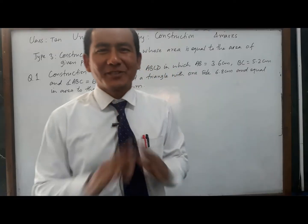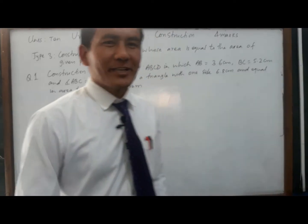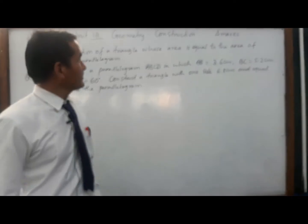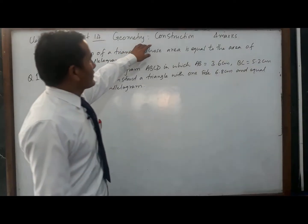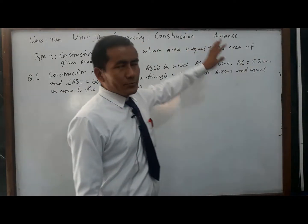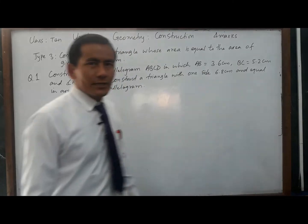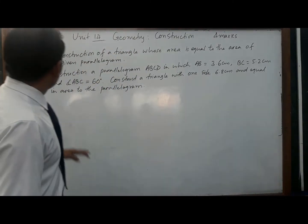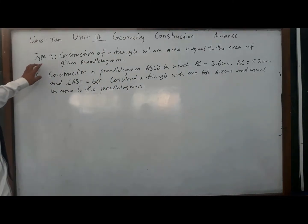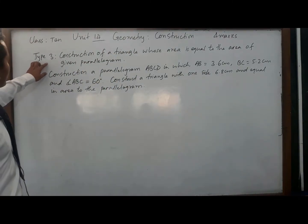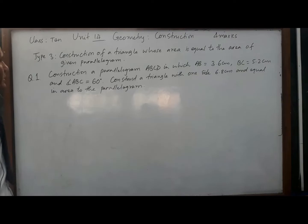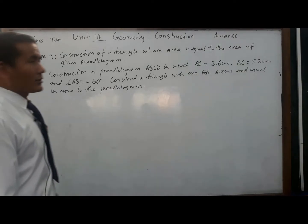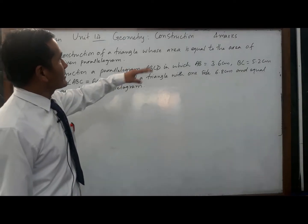Hello, namaskar, this is Kumar Taman. Today I am going to teach you geometric construction which carries four marks for Class 10. Today I am going to teach you the third type in construction: construct a triangle whose area is equal to the area of a parallelogram.